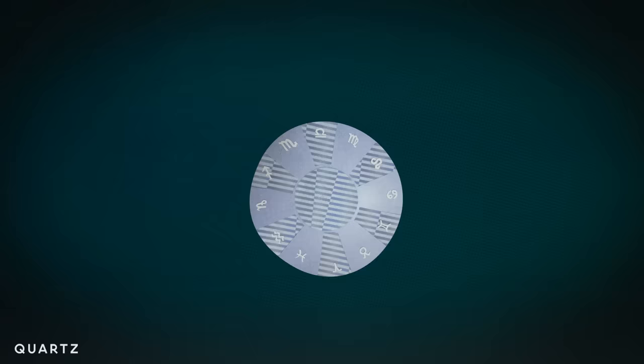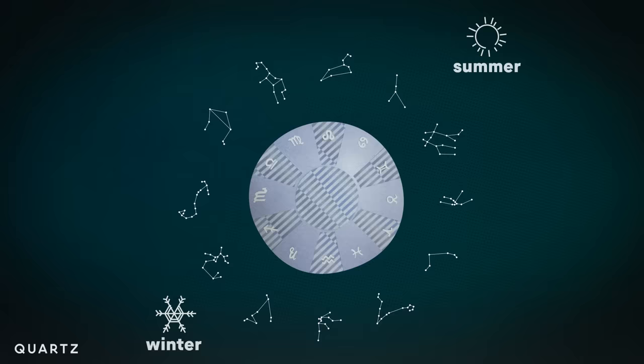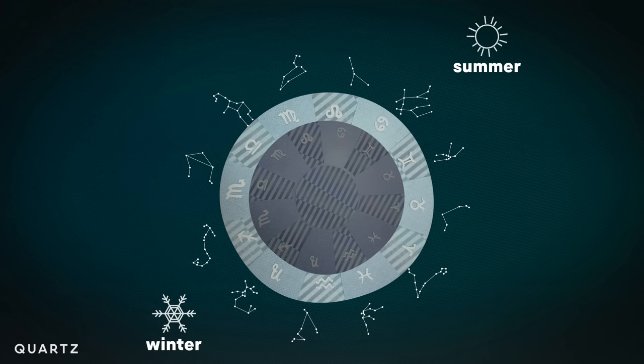A lot of these astrologers probably understood astronomy better than most of us do today. And the discovery of precession changed astrology, too. Western astrology started correlating sun signs to the seasons, instead of to the stars. It's why your sun sign is tied to the time of year you were born.